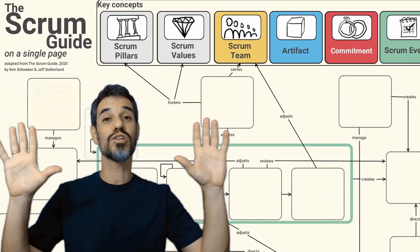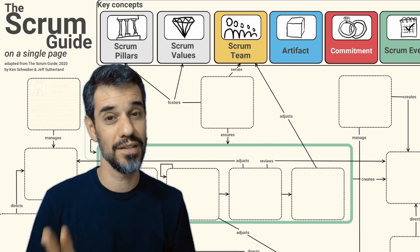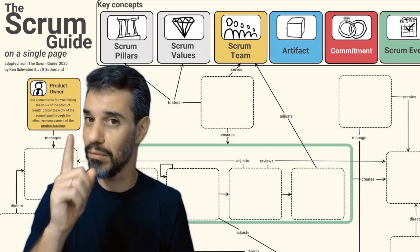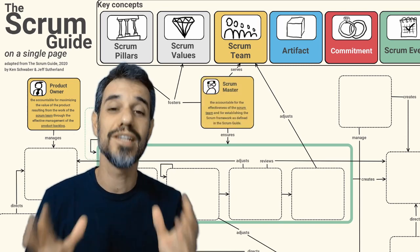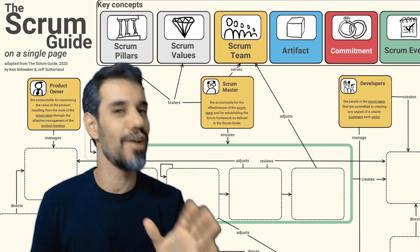Let's open now for the more specific concepts of Scrum. Let's start with the Scrum team. There are three roles in the Scrum: the product owner, one product owner per Scrum team, one Scrum master per Scrum team, and up to 10 developers.